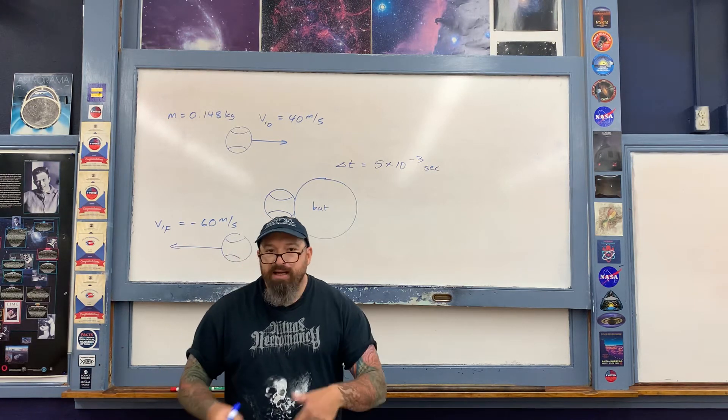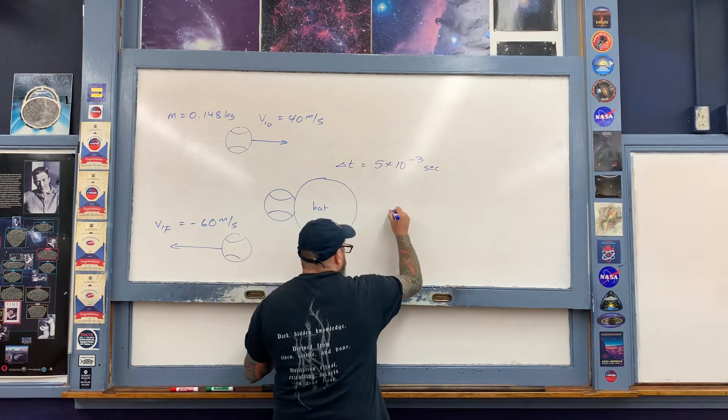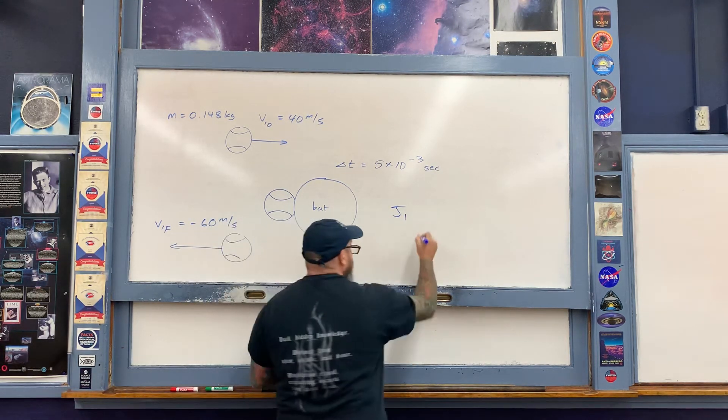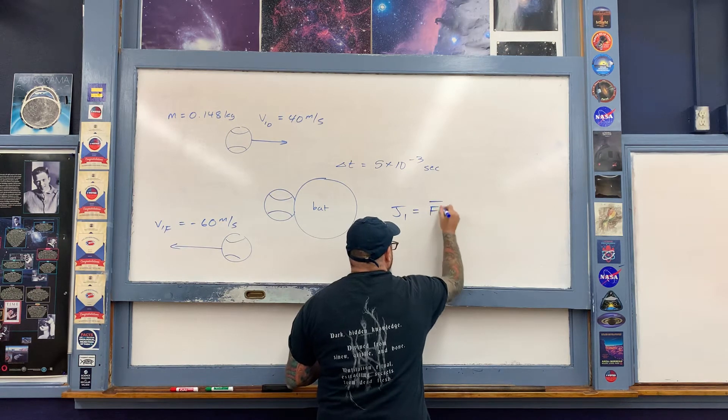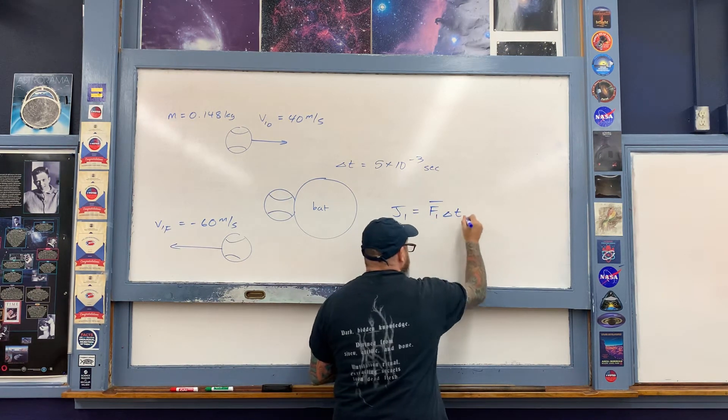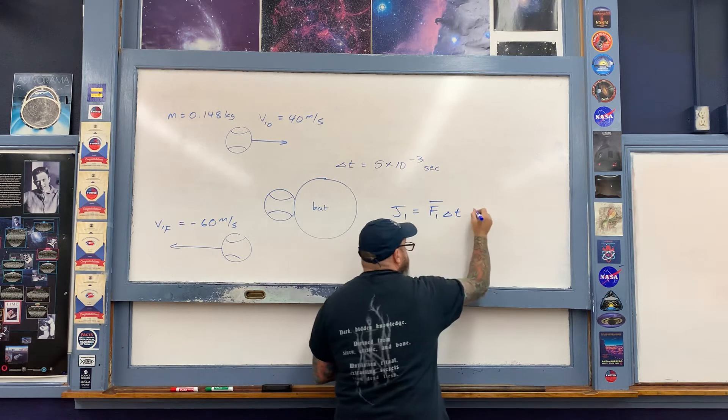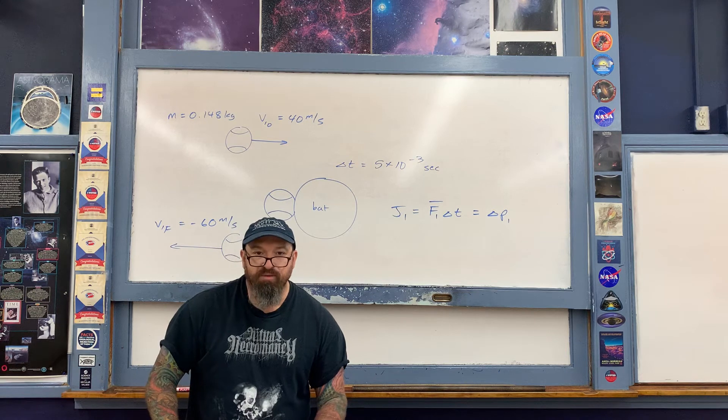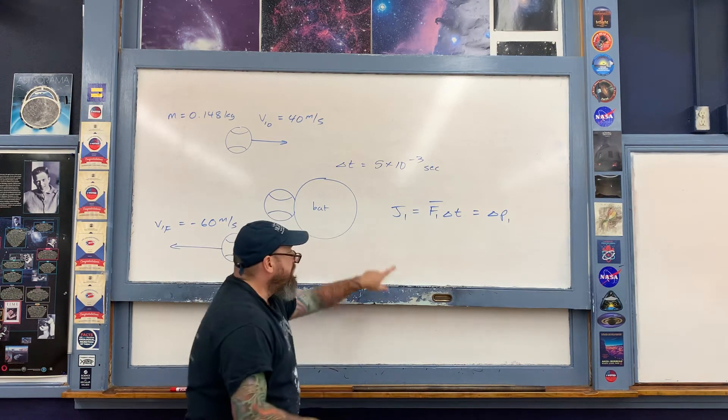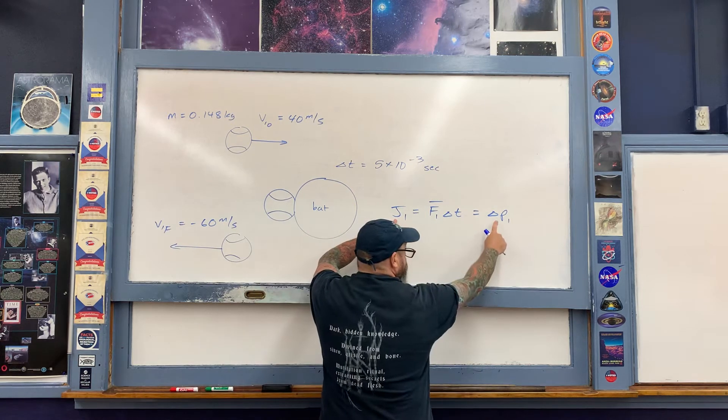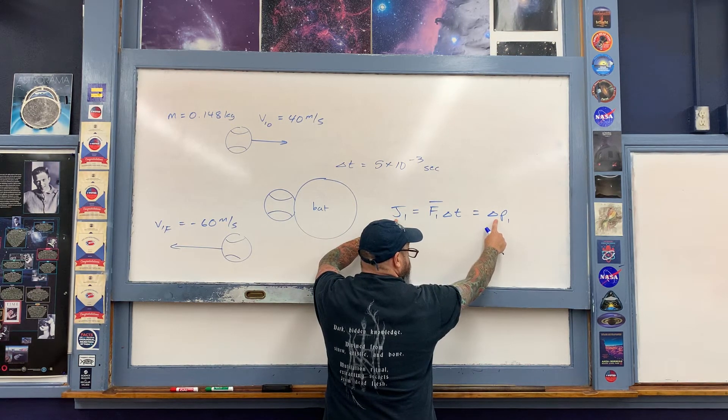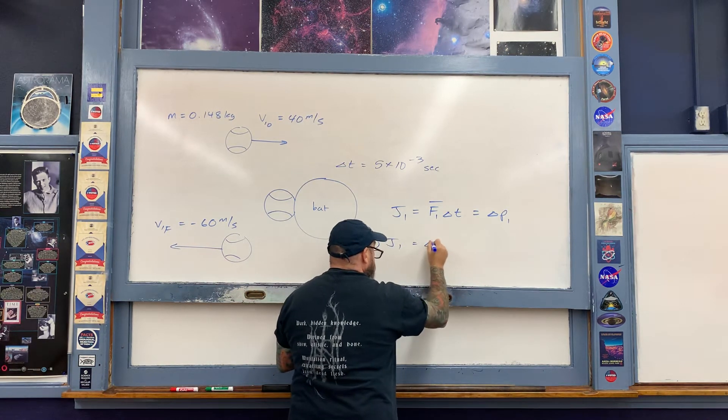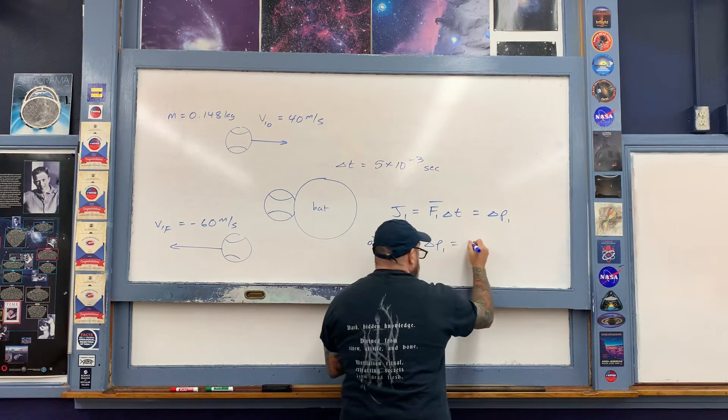Here's our impulse equation. The impulse delivered to object number one (the ball) is equal to the average force exerted upon the ball multiplied by the time interval Δt, but this is also equal to the change in momentum of the ball. The change in momentum can be easily calculated in part A. We're using this portion of the expression for part A.